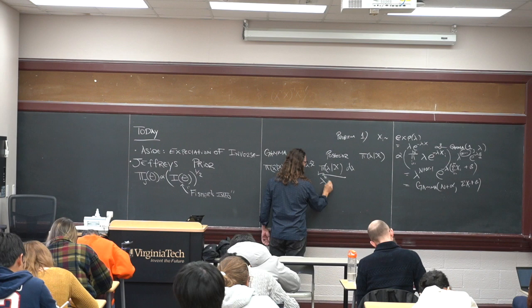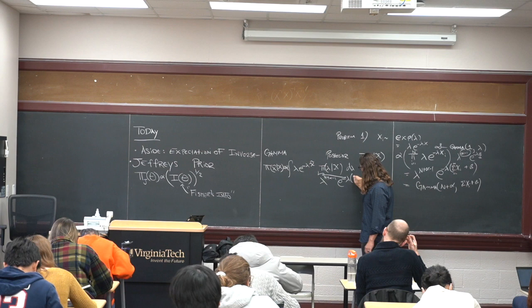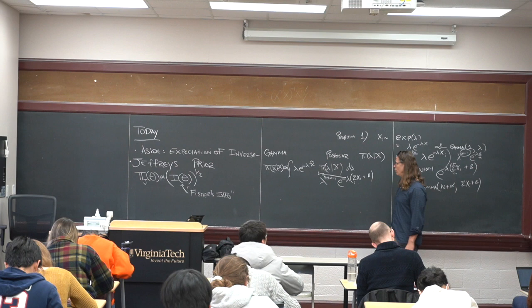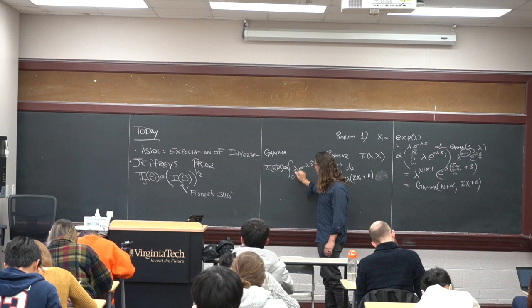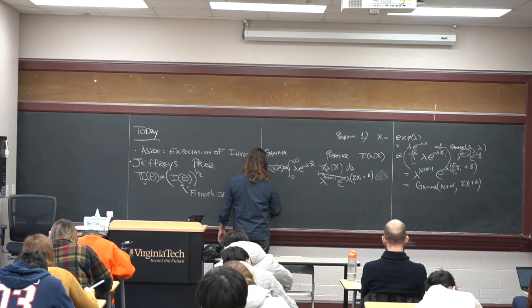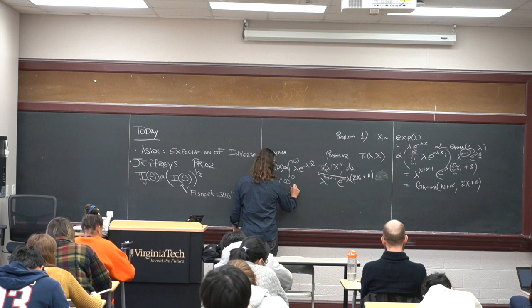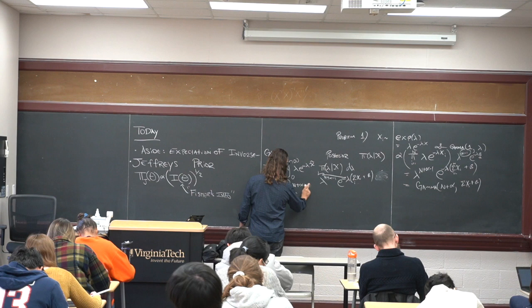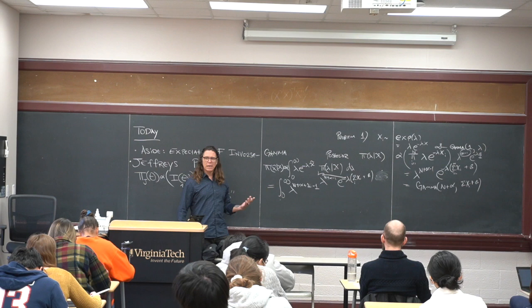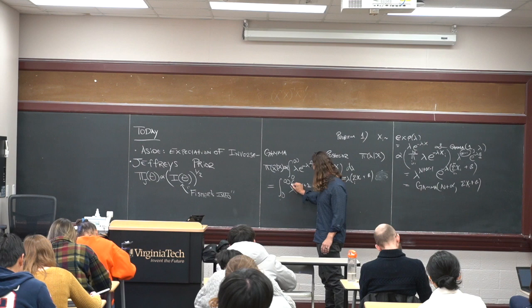That gives lambda to the n plus alpha minus 1 times e to the minus lambda times the sum of x_i's plus beta. We can absorb some terms, integrate over lambda from zero to infinity — that's the support of lambda. We collect terms and recognize the kernel. So lambda to the n plus alpha plus 1 minus 1. I leave the plus one and minus one separate because it helps me recognize the kernel of the distribution.